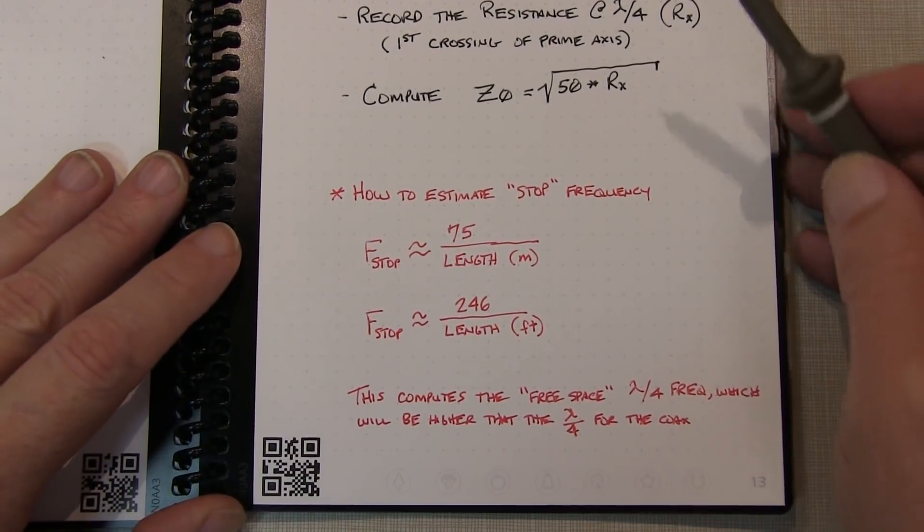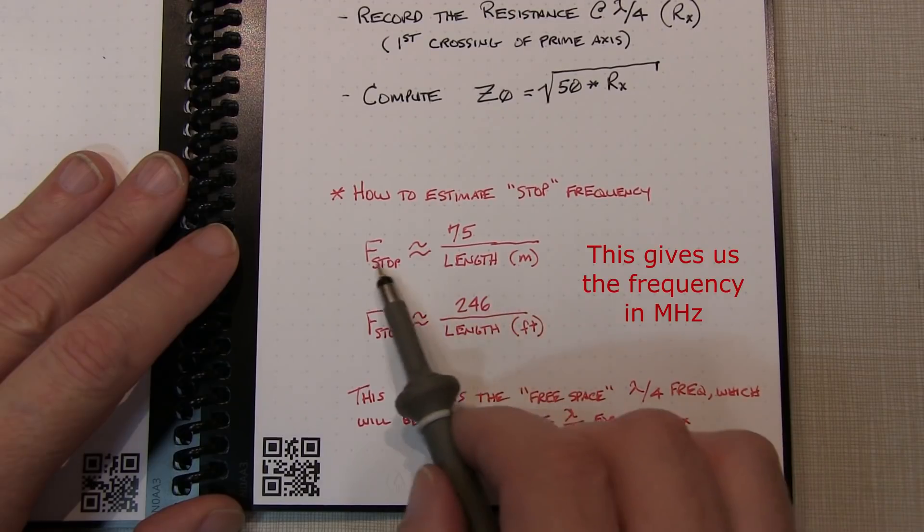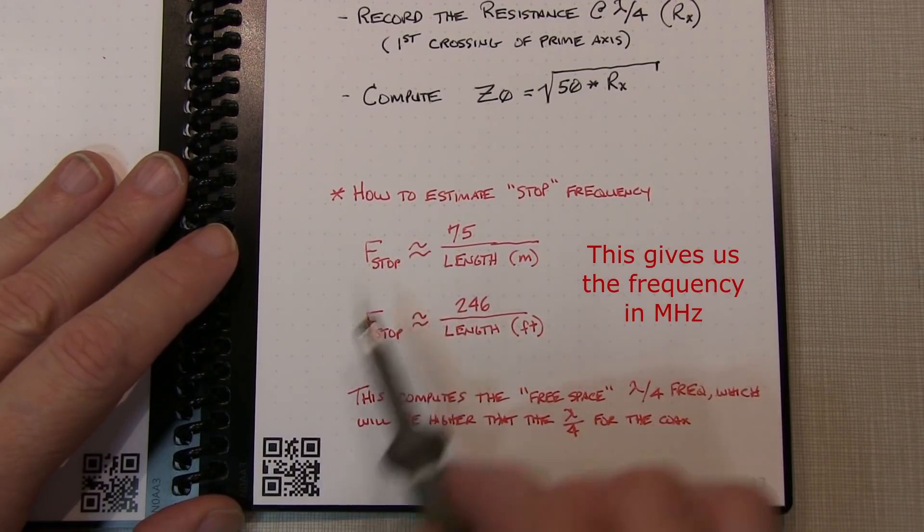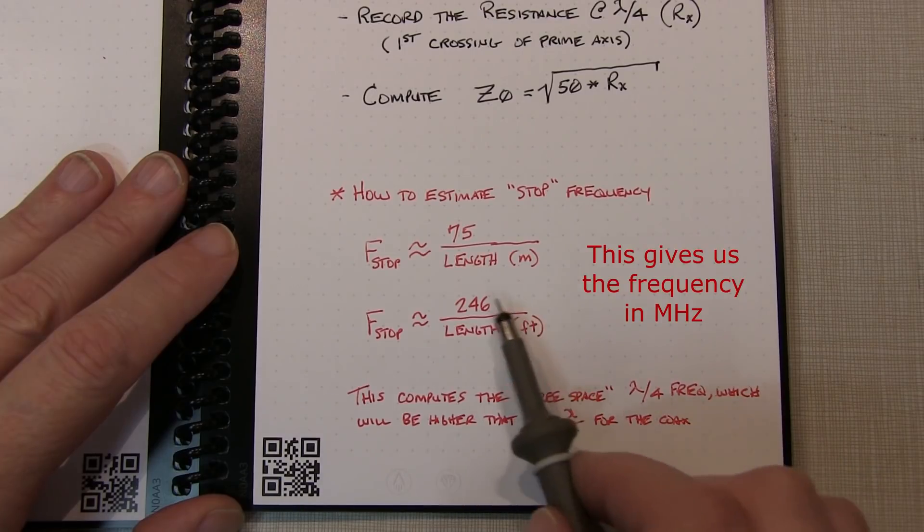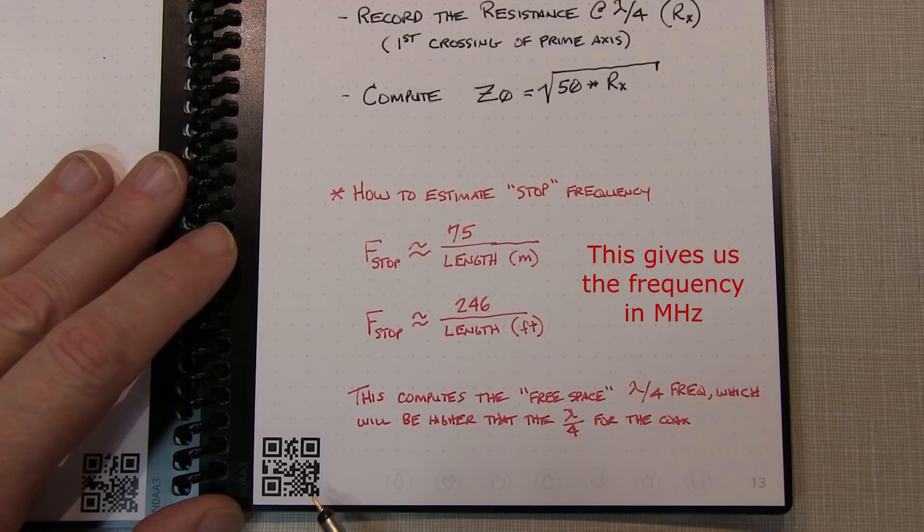And the way we do that is if we have the estimated length in meters, we just take 75 divided by that length, and that gives us our stop frequency. Or if we measure or estimate the line in feet, we take 246 divided by that length in feet.